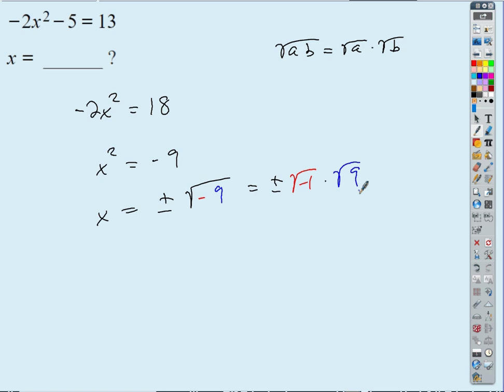The square root of -1 is what we define as the imaginary unit, i. That's our definition. So the square root of -1, we call i, and so our answer then ends up looking like two answers, plus or minus 3i.